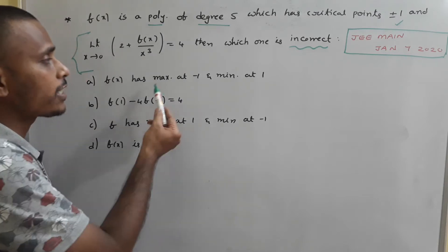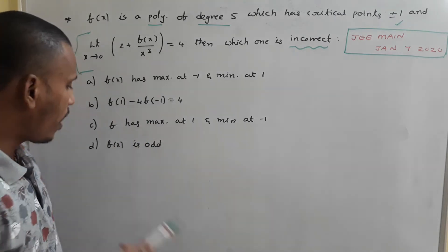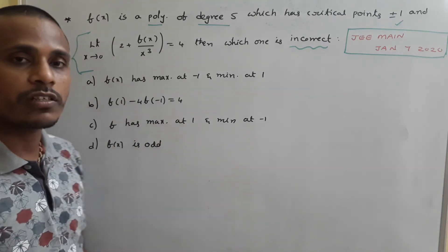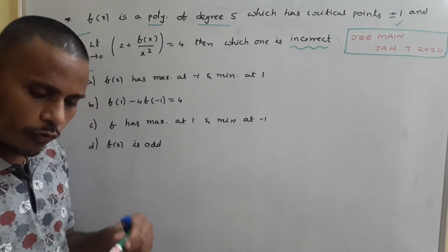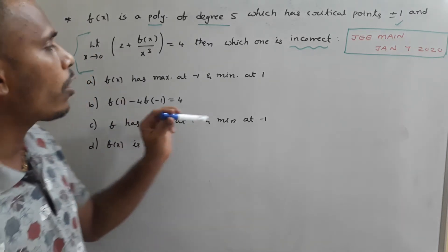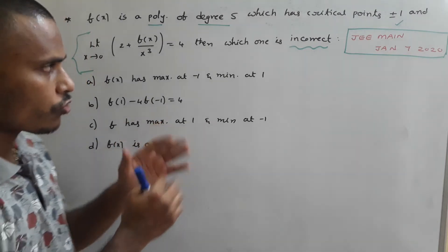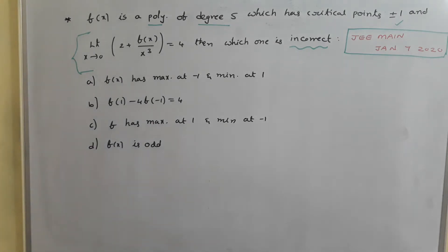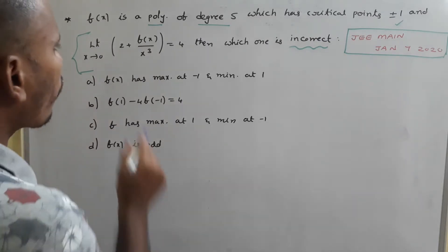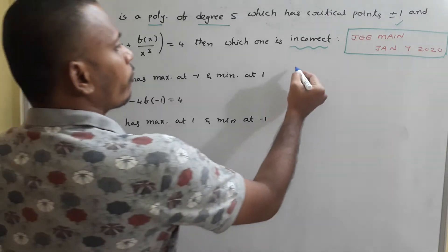The problem is about finding the maxima and minima of the function, as well as functional values at 1 and −1, and checking whether f(x) is odd or not. Ultimately, our intention is to find the polynomial of degree 5 — that is the core of the problem.